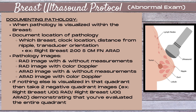After you've documented your pathology, you want to scan that entire quadrant around it to ensure you're not missing anything else. If nothing else is visualized in that quadrant, take your two negative quadrant images — for example, right breast upper outer quadrant radial and right breast upper outer quadrant antiradial — demonstrating to the radiologist that you've evaluated the entire quadrant.